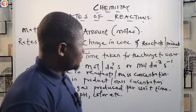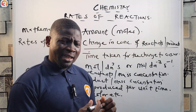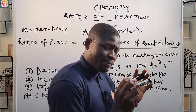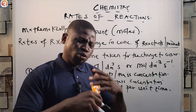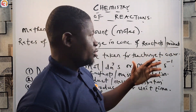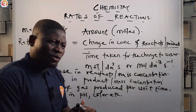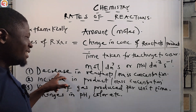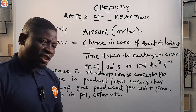So in the course of this video we have learned that different reactions can occur at different rates, and even a single reaction can occur at different rates depending on the conditions set for that reaction. The rate of reaction is defined as the amount in moles of reactants used up or products formed per unit time, mathematically expressed as change in concentration over time. Reaction rates are measured by decrease in reactants, increase in products, volume of gas produced per unit time, and changes in pH, colour, etc.